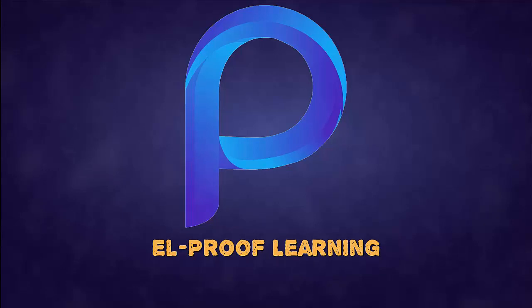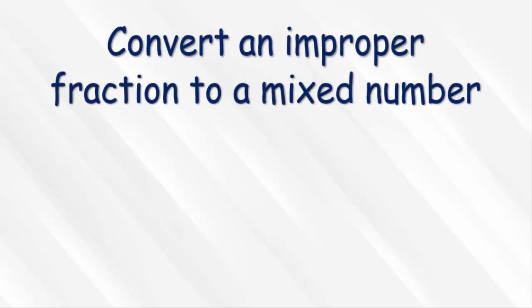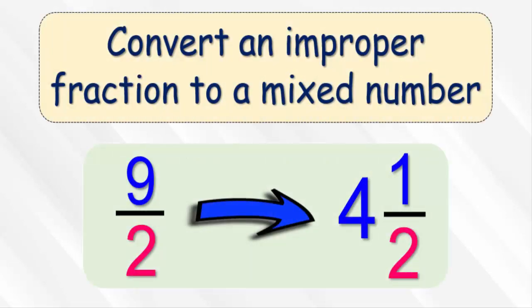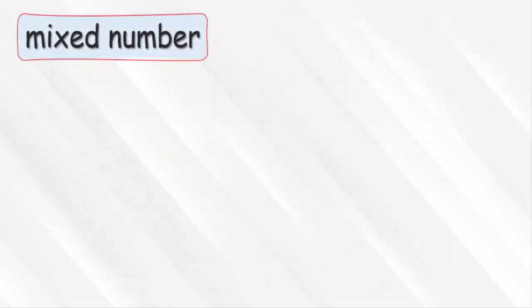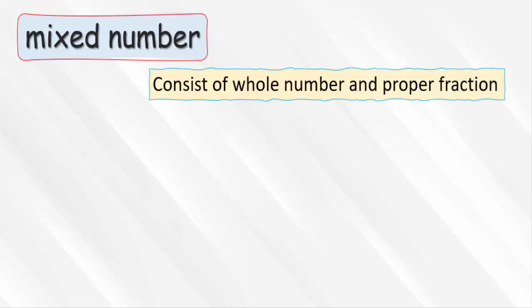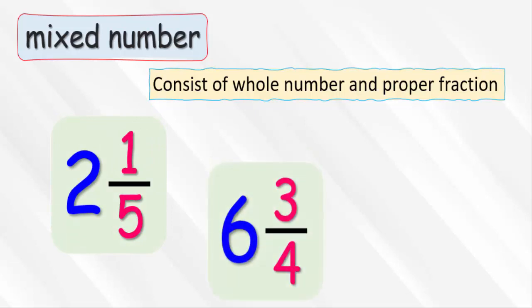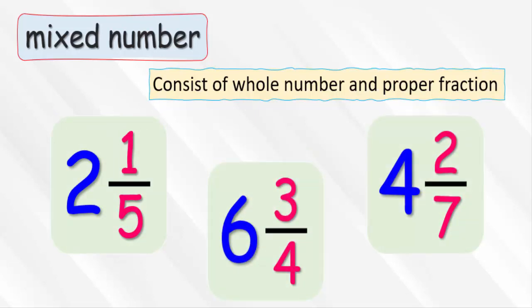Hello, welcome to the All Proof Learning channel. In this video we will explain how to convert an improper fraction to a mixed number form. In the beginning we should remember the difference between the mixed number and the improper fraction. A mixed number is a number in the form of a whole number and a proper fraction, like 2 and 1 over 5, 6 and 3 over 4, or 4 and 2 over 7.